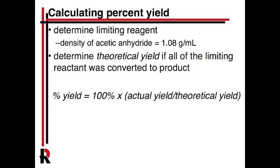Percent yield is just 100 times the actual yield you measured divided by the theoretical yield. Now, if you have a lot of water in your sample, your actual yield could in theory be more than 100% — not because it's really over 100%, but because the water impurity has bumped it over. My guess is that our yields will be decent; this gets pretty dry. Once you get the mass, you should be able to calculate this right in lab.